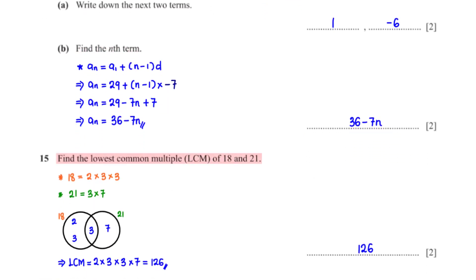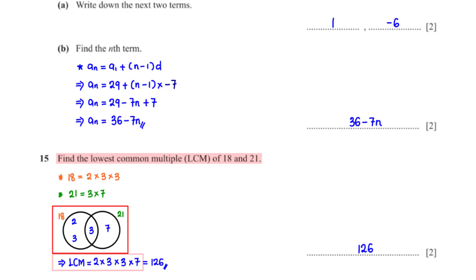Find the lowest common multiple of 18 and 21. First, list the prime factors of 18 and 21, then map them on a Venn diagram. The product of the elements in the Venn diagram gives us the LCM: 2 times 3 times 3 times 7 equals 126.